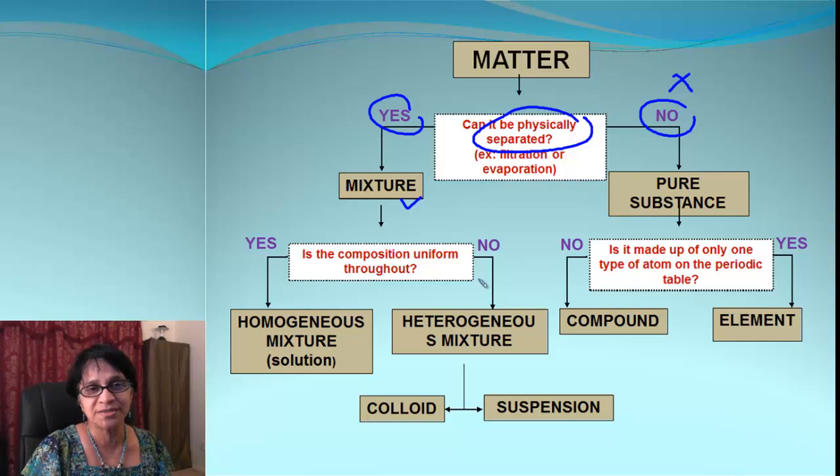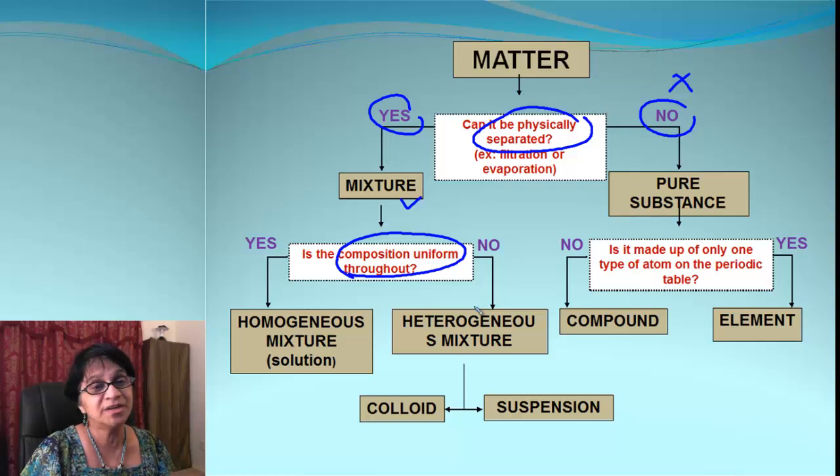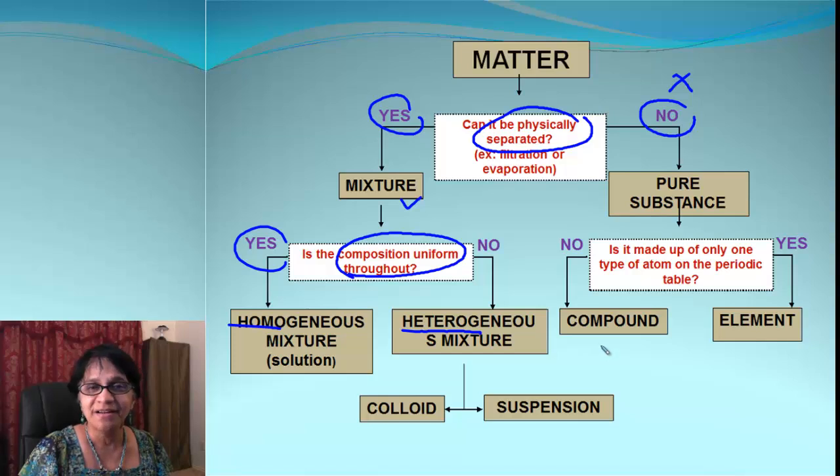Now let's go back to the mixture side. There are two different types of mixtures, and they are based upon how they appear. How is the nature? Is it uniform throughout or not? If it is uniform, then we call it homogeneous mixture. And if it is not uniform, then we call it heterogeneous mixture.